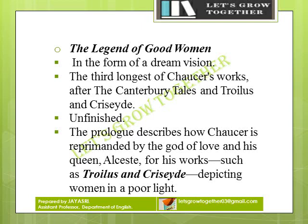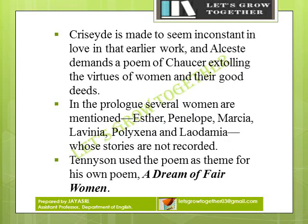The Legend of Good Women is in the form of a dream vision. It is the third longest of Chaucer's works, after the Canterbury Tales and Troilus and Criseyde. It was also unfinished. The prologue describes how Chaucer is reprimanded by the God of Love and his queen, Alceste, for his works such as Troilus and Criseyde depicting women in a poor light. Alceste demands a poem extolling the virtues of women and their good deeds. In the prologue, several women are mentioned — Esther, Penelope, Marcia, Lavinia, Polyxena, and Laodamia — whose stories are not recorded.